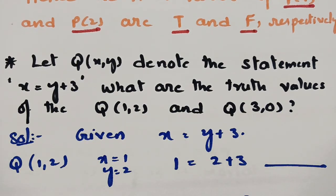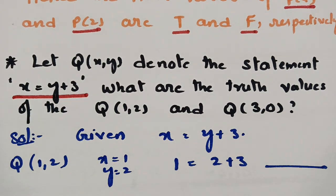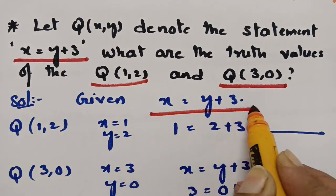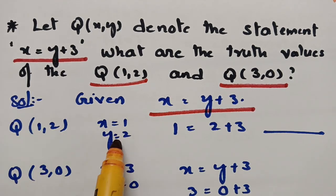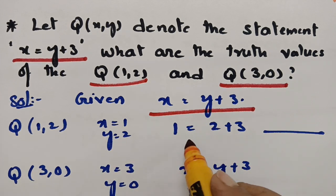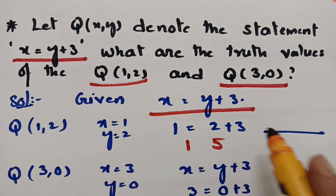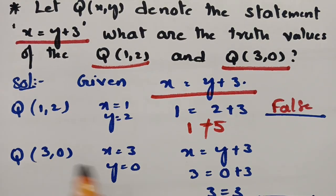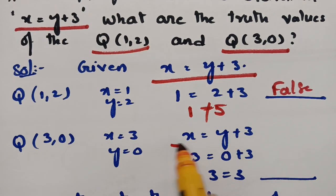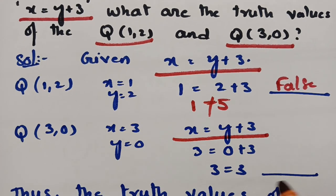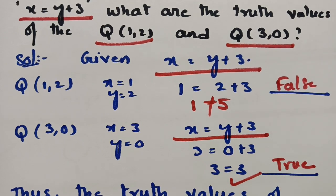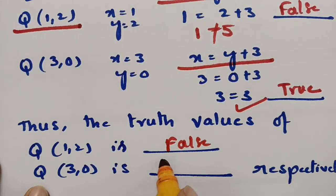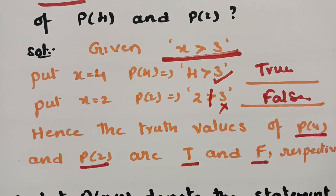Let Q(x, y) denote the statement 'x = y + 3.' What are the truth values of Q(1, 2) and Q(3, 0)? For Q(1, 2): x = 1, y = 2, so 1 = 2 + 3 = 5 — not equal, so this is false. For Q(3, 0): x = 3, y = 0, so 3 = 0 + 3 = 3 — true. Therefore Q(1, 2) is false and Q(3, 0) is true.